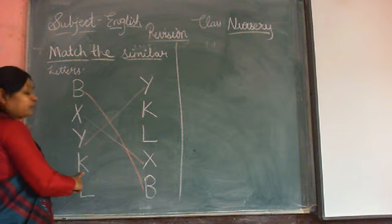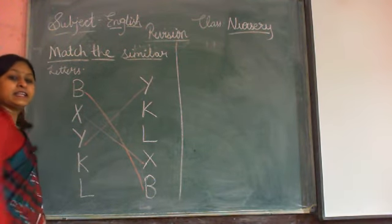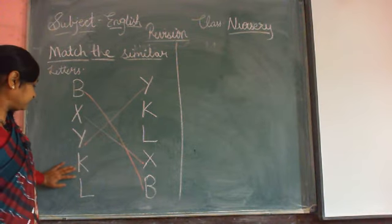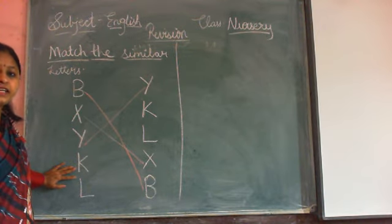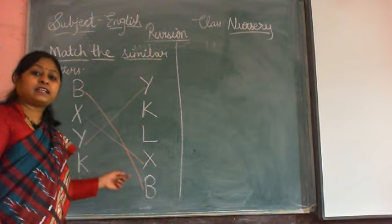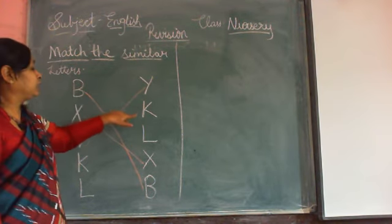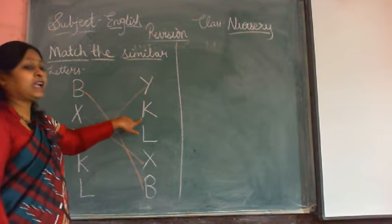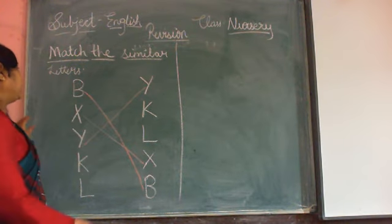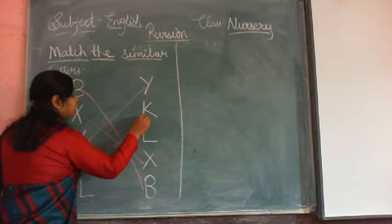Now look here. Which letter is this? K. So find here — where is letter K? This is Y. Yes. K. So what will we do? We will match K with K.